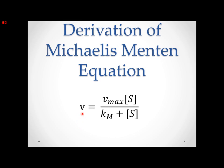The velocity of a reaction is equal to the maximum velocity that's possible to obtain times the substrate concentration, over Km, the Michaelis-Menten constant, plus substrate concentration.